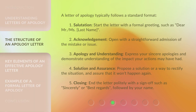A letter of apology typically follows a standard format. One: Salutation — start the letter with a formal greeting, such as 'Dear Mr. [Last Name].' Two: Acknowledgement — open with a straightforward admission of the mistake or issue. Three: Apology and Understanding — express your sincere apologies and demonstrate understanding of the impact your actions may have had. Four: Solution and Assurance — propose a solution or a way to rectify the situation and assure that it won't happen again. Five: Closing — end the letter politely with a sign-off, such as 'Sincerely' or 'Best Regards,' followed by your name.